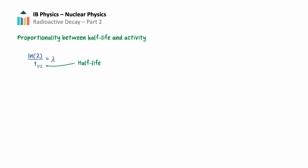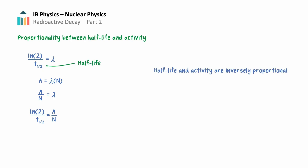Using this equation and combining it with the simplified activity equation A equals lambda times n, we get that ln 2 divided by the half-life equals activity divided by the number of radioactive nuclei remaining. With the equation in this form, we can see that half-life and activity are inversely proportional. The radioisotope with a shorter half-life will have a higher activity, or more decays per unit time, than a similar sample with a longer half-life.